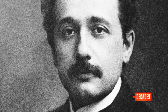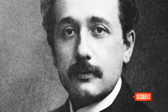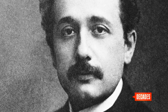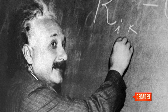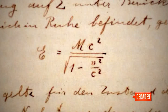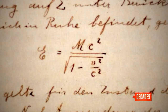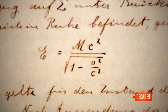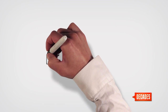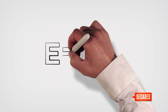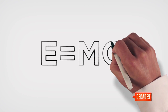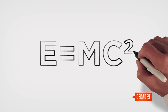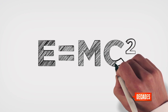1905 was a banner year for Albert Einstein. It was the year he published his first paper on relativity, which included the equation that would revolutionize the world. In his original draft he wrote it out differently, but he soon restructured it to its simpler, more elegant form, which has now become part of our cultural vocabulary and our understanding of the world.